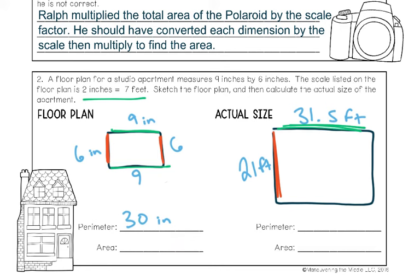Now let's find the perimeter of the actual apartment. You can take 21 times 2 and add that to 31.5 times 2 — either way you do it, you end up with 105 feet. You might get asked how many times larger the perimeter of the actual apartment is than the floor plan — that means divide 105 by 30 and you get 3.5. Notice that 7 divided by 2 is also 3.5 — that's the scale factor connection.